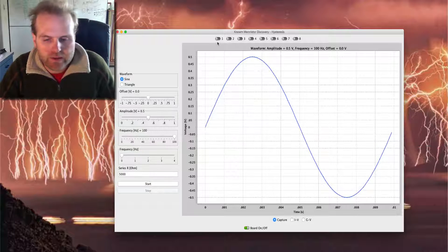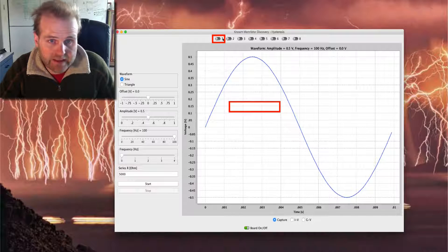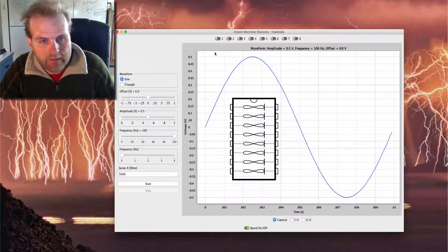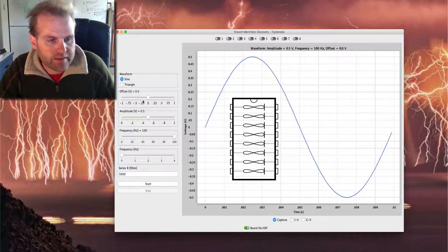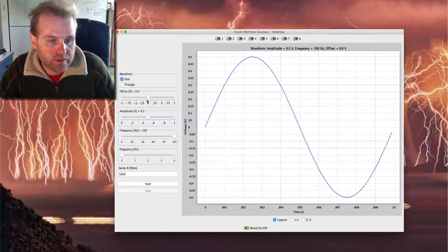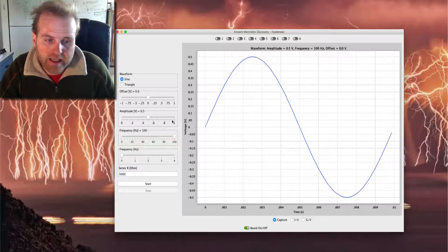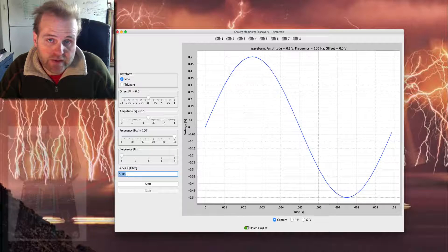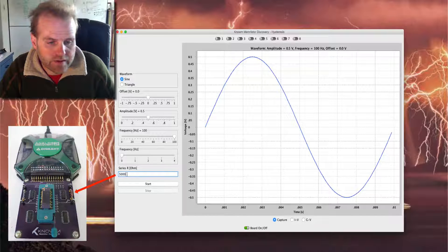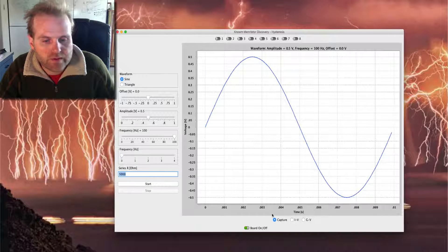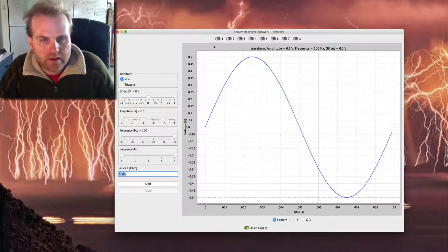So what you can do is select the device that you'd like to work with up here. And you can set the applied waveform, sine or triangle as well as offset, amplitude, frequency. And if you decide to change the series resistor, you can change that here as well. We also have different views that you can use.